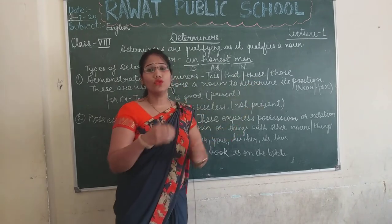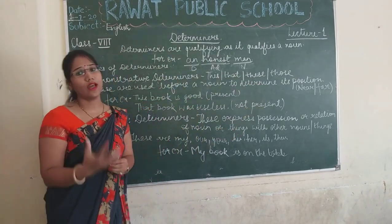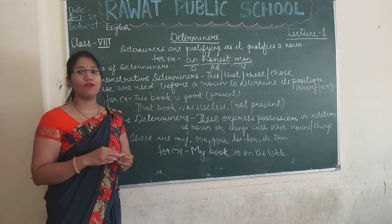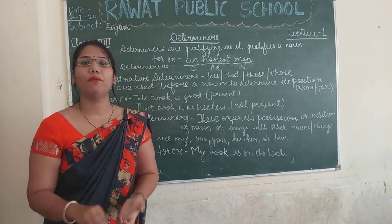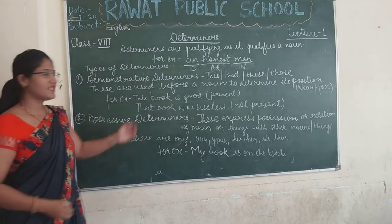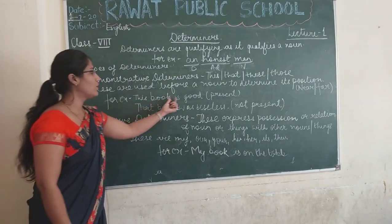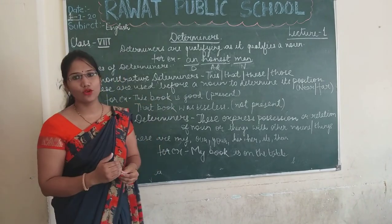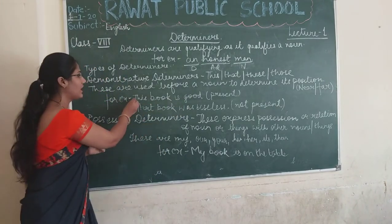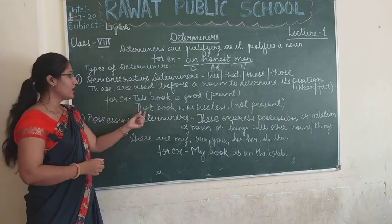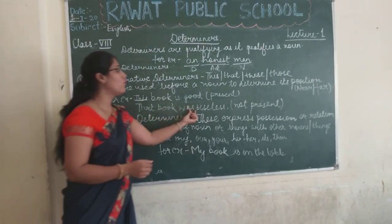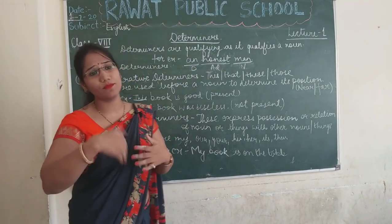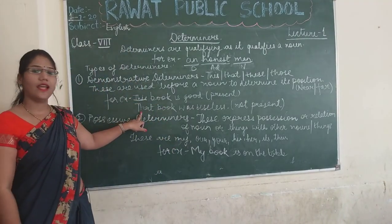'That' and 'those' un cheezein ke liye use mein aata hai, un nouns ke liye use mein aata hai joh humse door hoti hain — they are far away from us or they are not present. For example: 'This book is good' — jo present mein hummare paas book hai. 'That book was useless' — woh book present mein hummare paas nahi hai ya phir woh humse door hai, isliye humne 'that' ka use kiya hai.